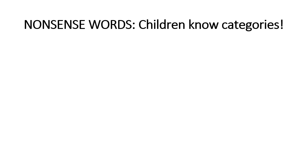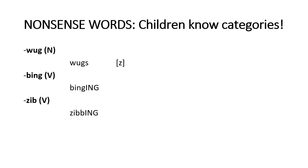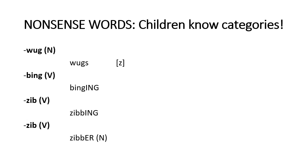In that recording, we see a three- or four-year-old girl producing forms of words that do not exist. For 'wug,' she made the correct plural: 'wugs'. For the verbs 'bing' and 'zib,' she produced the -ing forms correctly. And for the verb 'zib,' she knew the corresponding noun was 'zibber'. So Plato's paradox comes into play again: how did the girl learn those forms if she had not been taught them? Those words do not exist. That is Plato's paradox.